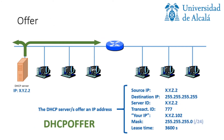The server — or servers, because there could be more than one — will answer to the whole network because the host still doesn't have an IP, and will offer an IP with a mask. This is the format of the DHCP offer: source IP is .2, destination is broadcast, server ID is .2. It has the offer in the 'your IP' field, which is .102. It also has a mask and a lease time.